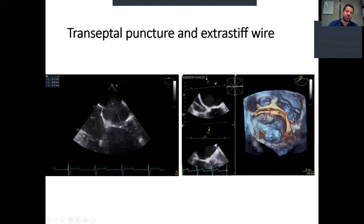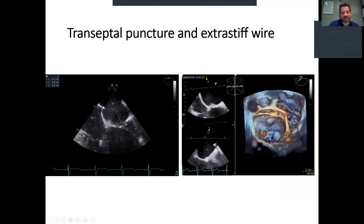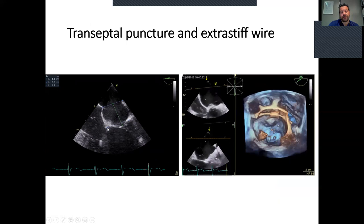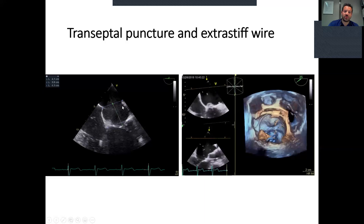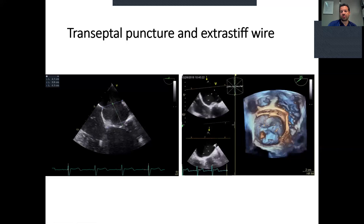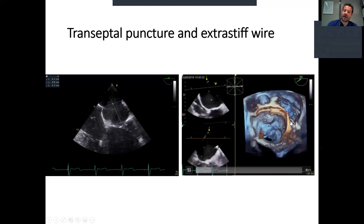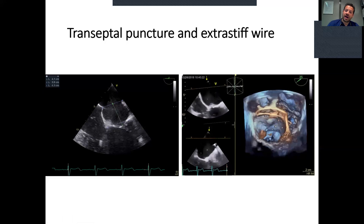Before puncture, we have to measure the height — you can see the tenting of the septum, and from this point we measure the height towards the annulus. We have to be more than four centimeters higher from the annulus. After measuring the height, we proceed with the extra-stiff wire towards the left atrium.